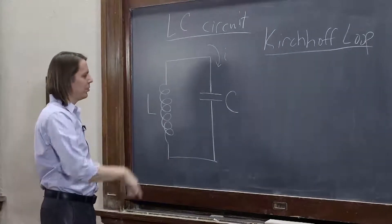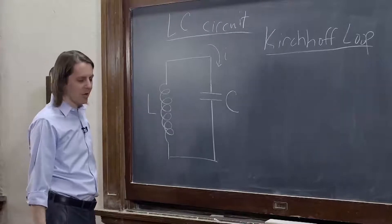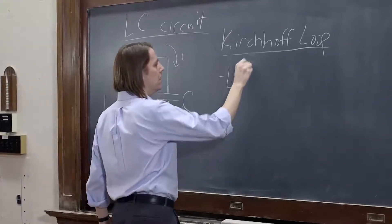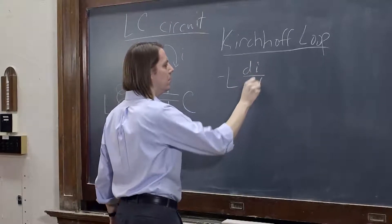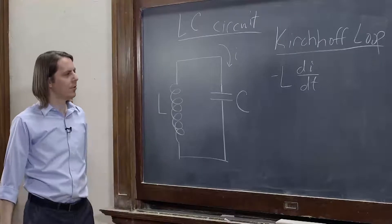So we're going with the current through an inductor. Assuming the current is increasing, then you're going to go back EMF. So we have minus L di dt. That's the potential drop across the inductor.